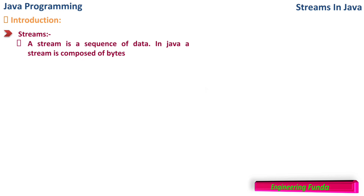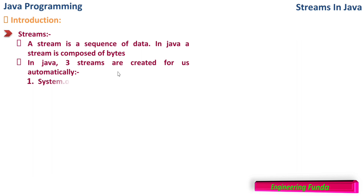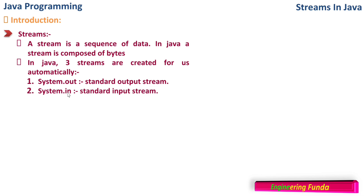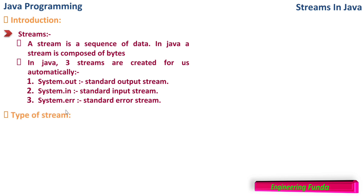A stream is a sequence of data. In Java, a stream is composed of bytes. In Java there are three stream classes that are created by default, which are automatically present inside Java. First is System.out, which is the standard output stream. Then we have System.in, which is the standard input stream, and System.err, which is the standard error stream. These three are the standard stream classes available inside Java by default, but we can create our own stream class objects and use them.